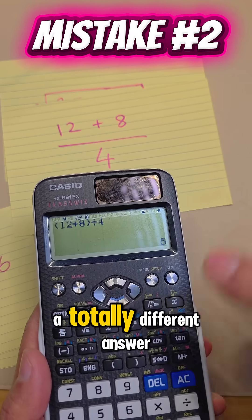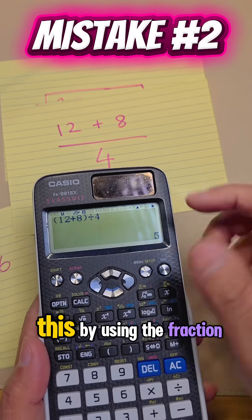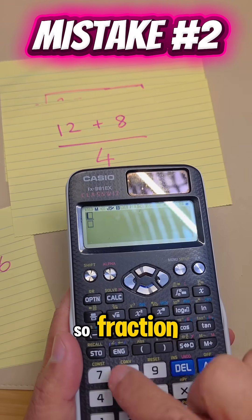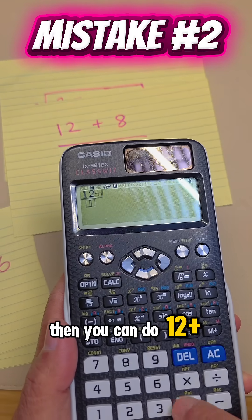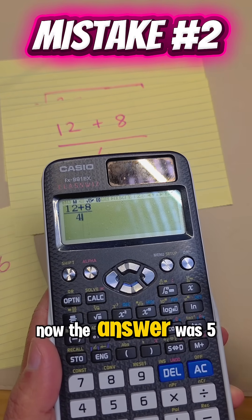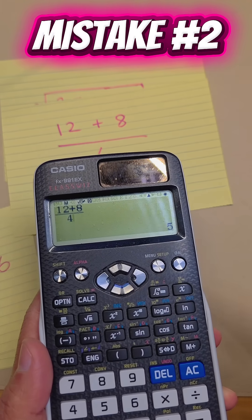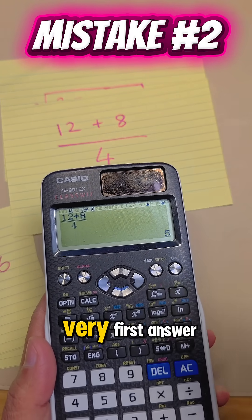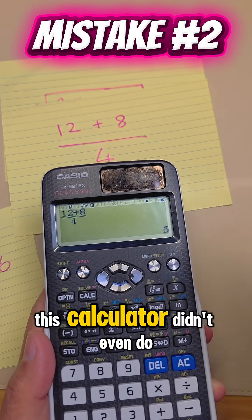So previously, it was a totally different answer. Now we're going to double check this by using the fraction. So fraction, then you can do 12 plus the 8 and then go down and divide by 4. Now the answer was 5. The answer here is 5. So can you see that very first answer? This calculator didn't even do it correctly.